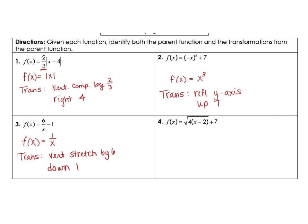Number 4 – same idea here – our parent function is the square root of x, but then your transformations – you have quite a few here. The first transformation is a horizontal compression, because the growth rate is faster, so it's going to make your graph skinnier. So it's a horizontal compression by the reciprocal, which is 1 fourth. And then we are going to move right, and then up 7.